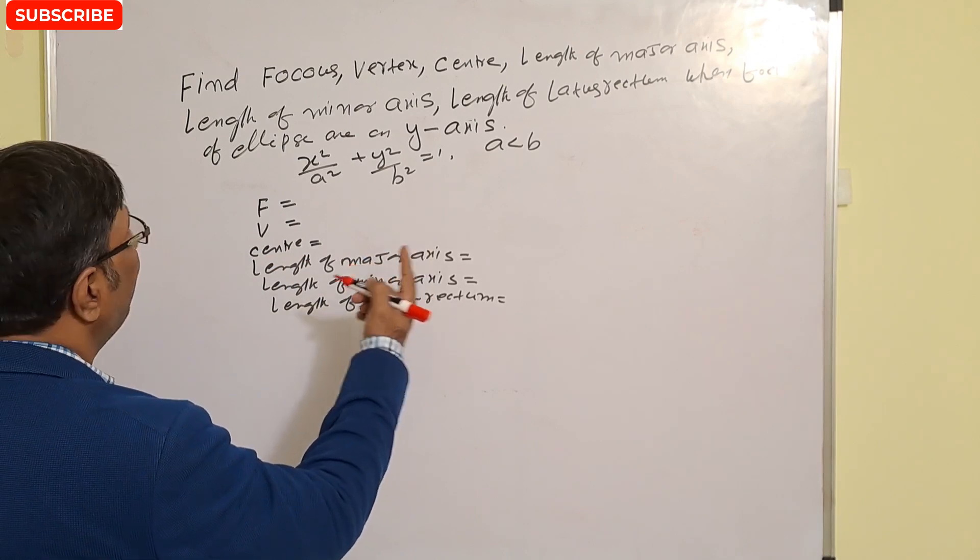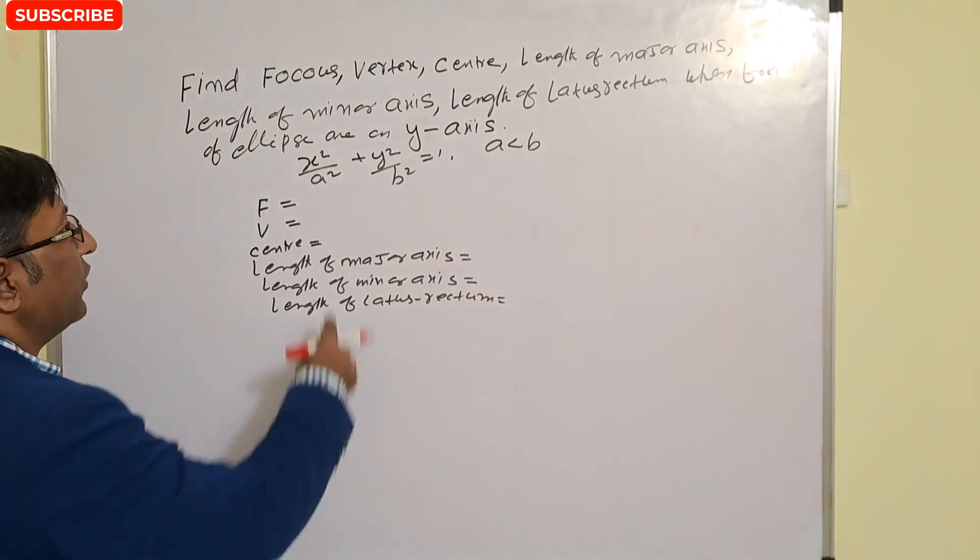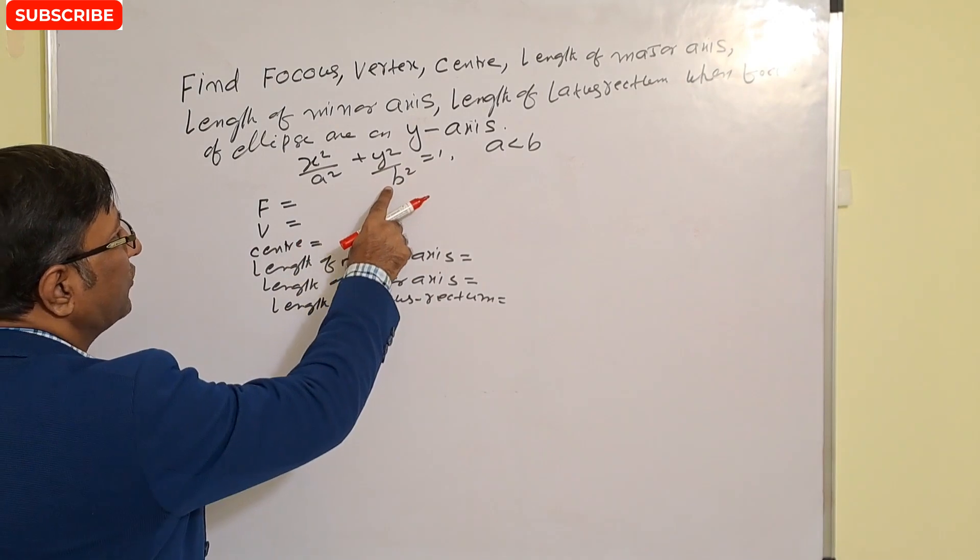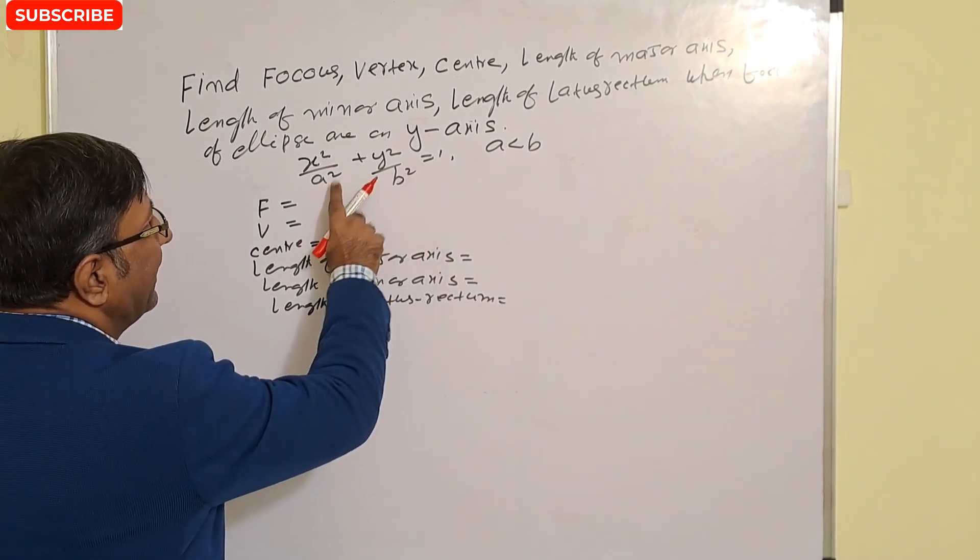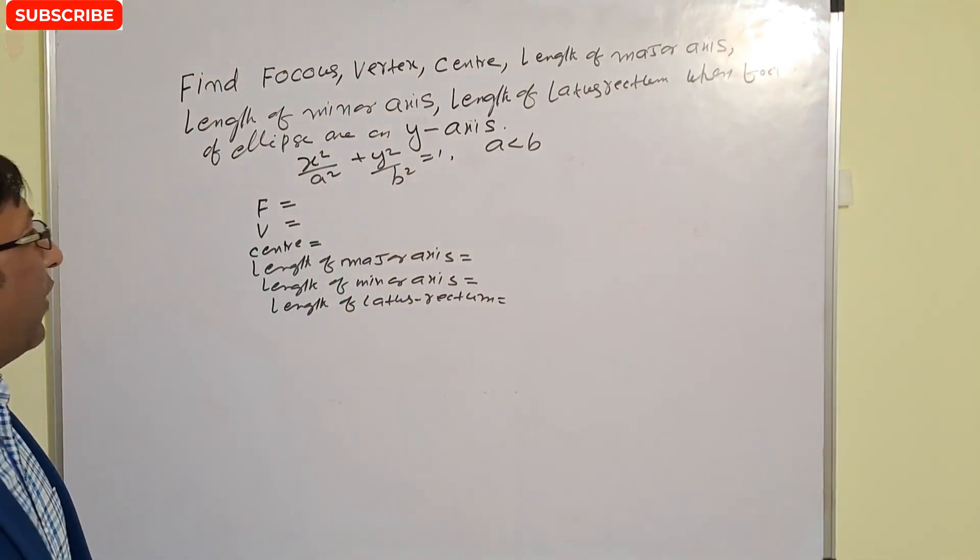length of latus rectum, and foci of ellipse are on the y-axis. So x² upon a² plus y² upon b² equal to 1, and a less than b. So it is the ellipse on the y-axis.